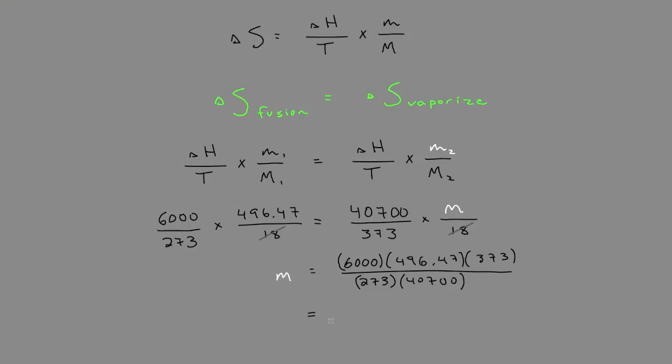I didn't show the units because I wanted to keep things simple and keep it short. If I did, you would see that they would... Joules would cancel, moles would cancel, Kelvin would cancel, leaving us with grams. Therefore, the mass of the water that gets vaporized is 100 grams.